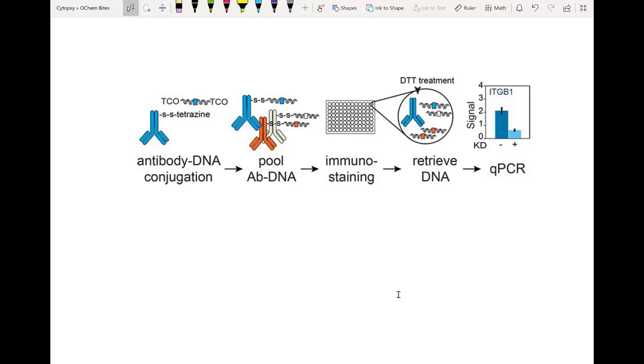In this paper the goal is to create a series of antibody DNA conjugates with disulfide linkers and PEG spacers in between them so that the antibody and the double-stranded DNA are connected but also can be disconnected.